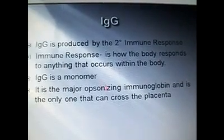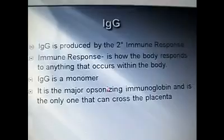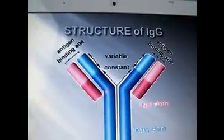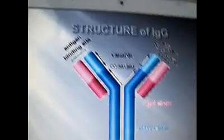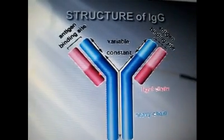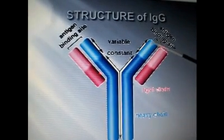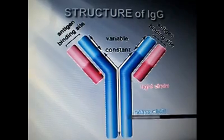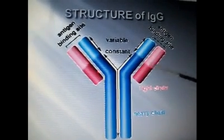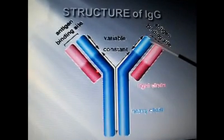IgG is a monomer and is the major serum immunoglobulin. It is the only one that can cross the placenta. IgG is made up of a light chain and a heavy chain. Each chain is made up of domains held together by disulfide bonds. Here we have a variable region.